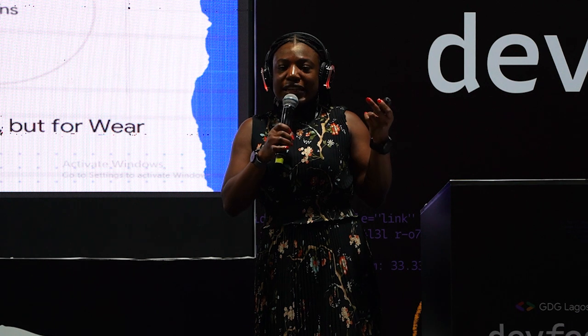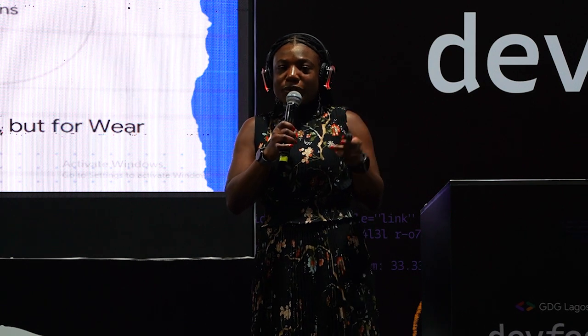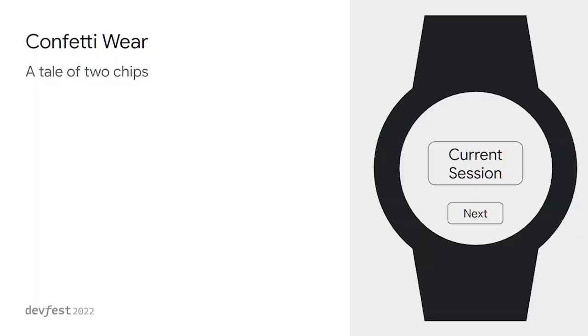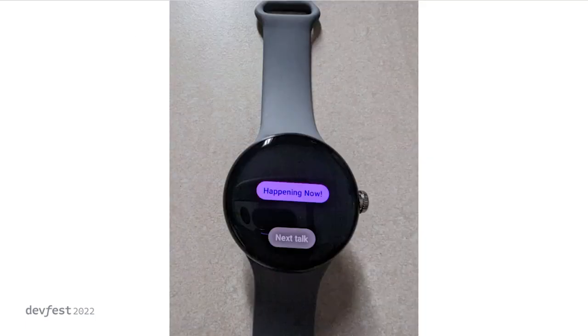I decided to go with tiles because they represent exactly what we want to do. With a tile you can have two buttons that take you directly into the current talk and the next talk. Here's a mockup or wireframe of what I thought the two tiles might look like before I even built it. And this is an actual watch — the app is on my wrist — showing two tiles: one for 'Happening Now' and one for the next talk.